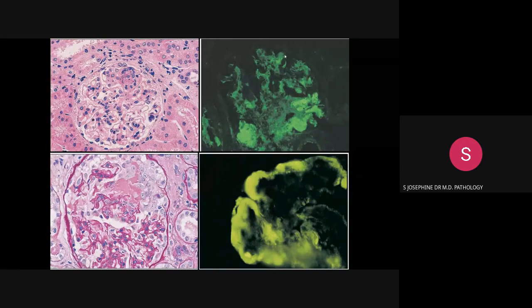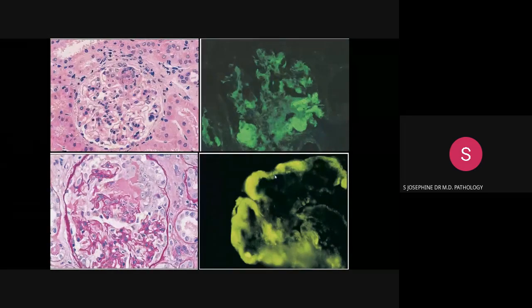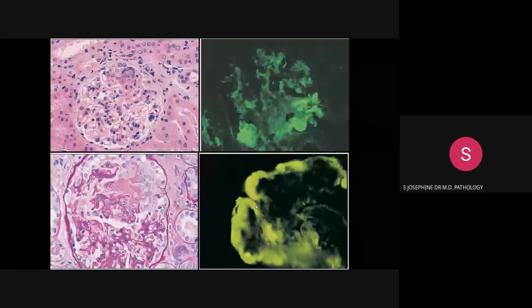On immunofluorescence for class 3, there are heavy IgG deposits in the glomerular capillary walls and lumina along with mesangial deposits. The characteristic picture of the wire loop deposit or sub-endothelial deposit conforms to the shape of the glomerular basement membrane, producing an outer comma-shaped deposit.